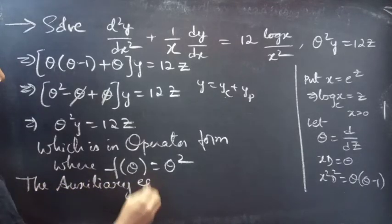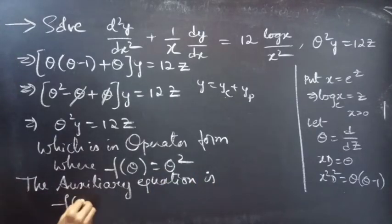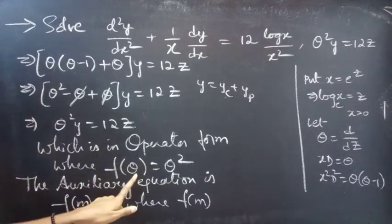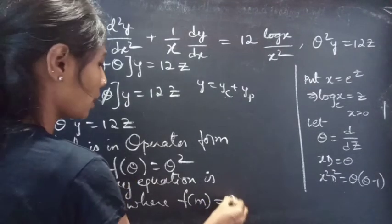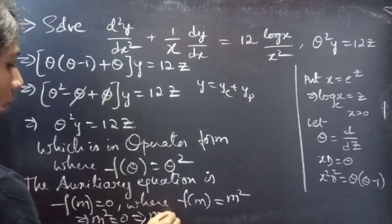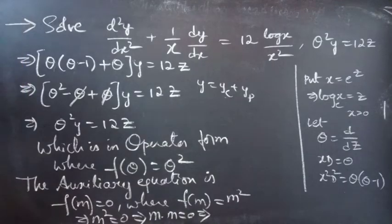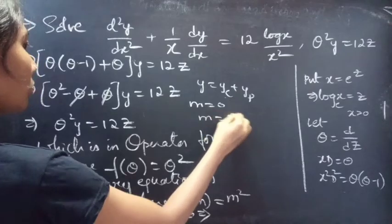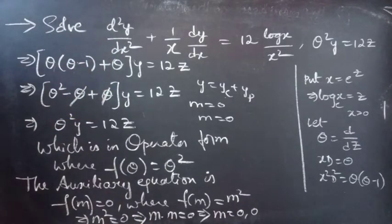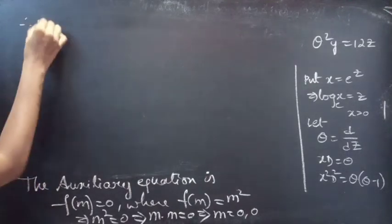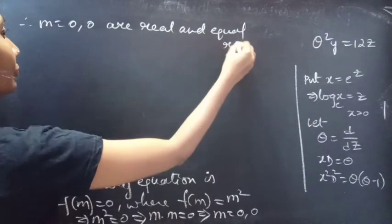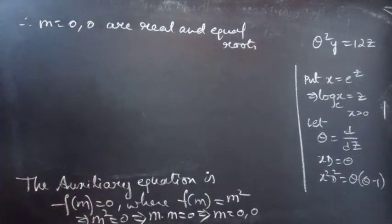The auxiliary equation is f(m) = 0, where f(θ) = θ². Replacing the differential operator by m, we get f(m) = m². So the auxiliary equation becomes m² = 0, which gives m·m = 0. Equating each factor to zero, we get m = 0, m = 0 — real and equal roots. Therefore, m = 0, 0 are real and equal roots of our auxiliary equation.